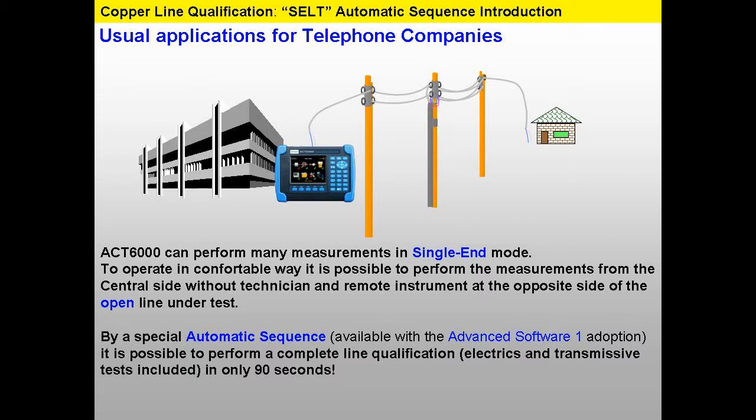The ACT-6000 can perform many measurements in single-hand mode. To operate in a comfortable way, it's possible to perform the measurements from the central side without a technician and remote instrument at the opposite side of the open line under test.